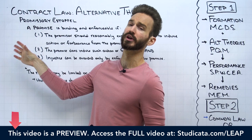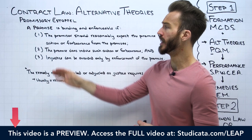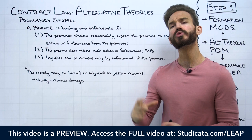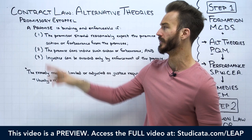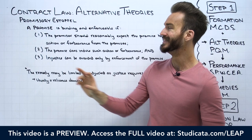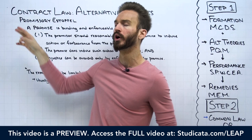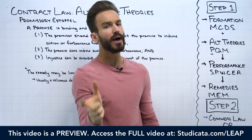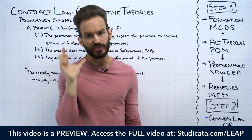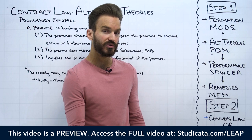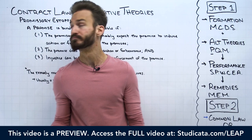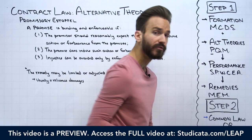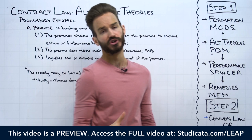Our first alternative theory of recovery is promissory estoppel. Before we jump into these elements and start breaking down examples, we need to do a quick refresher from an organizational standpoint. Promissory estoppel is all about detrimental reliance. These principles can creep into our formation discussion under mutual assent. We want to separate detrimental reliance as a principle used in formation of a traditional enforceable contract from promissory estoppel as an alternative theory of recovery available to the plaintiff when no traditional contract exists.